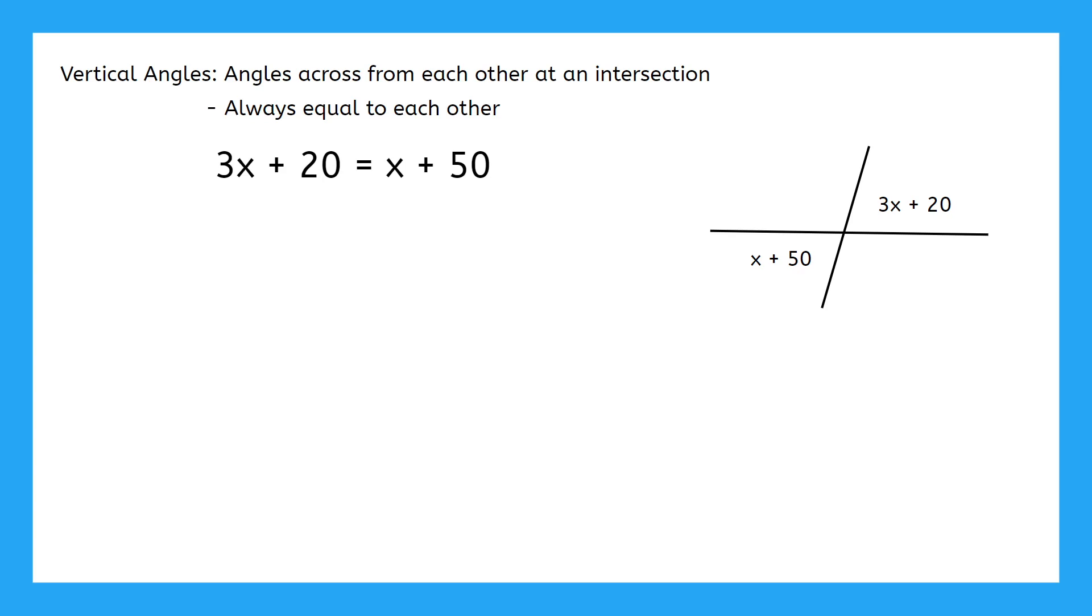From this point, we just have to solve for x. So we're going to subtract x from both sides, then subtract 20 from both sides, and finally divide both sides by 2. x is 15.